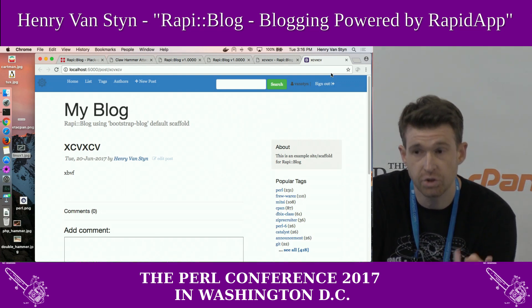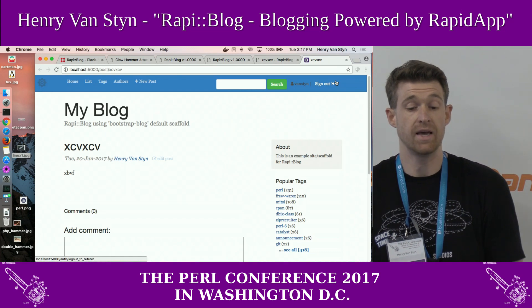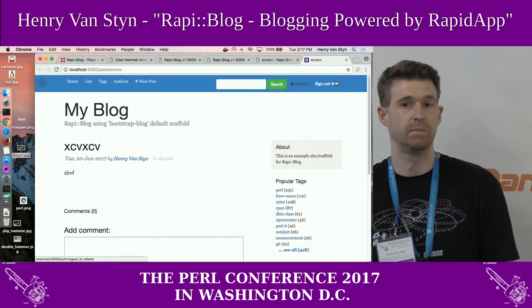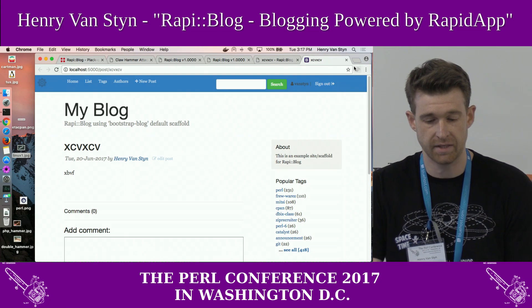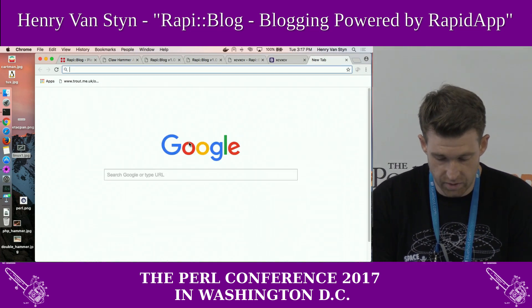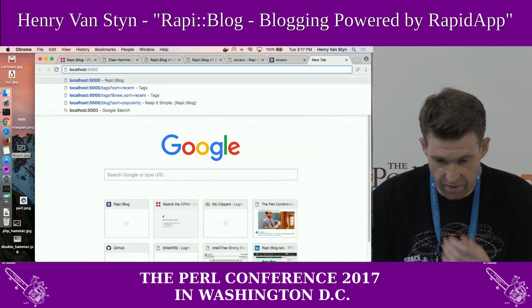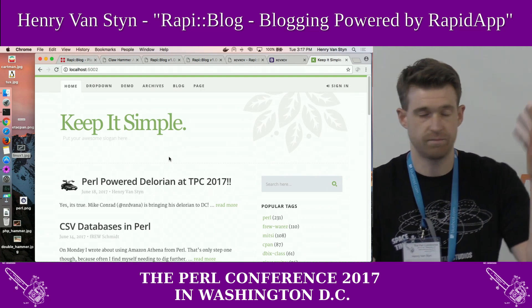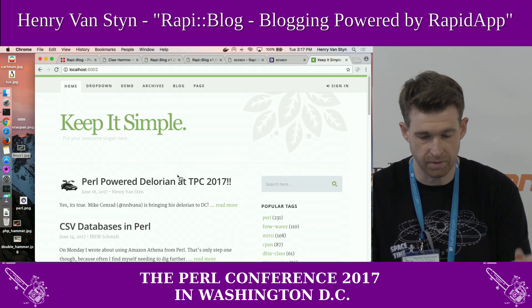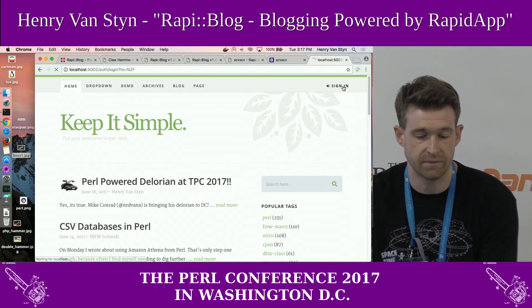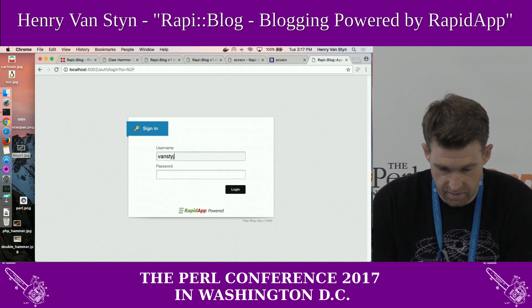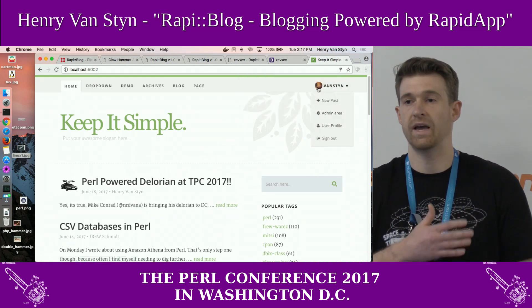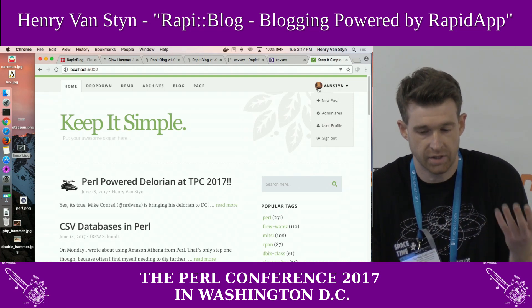I'm going to very quickly show you another scaffold. There are two scaffolds so far. This second one is based on another open source static HTML site you can download called Keep It Simple. This one decides to do things in a different way. We have a concept here like an avatar, which the other scaffold didn't choose to access, but this one does. We have a dropdown list — and the interfaces we've been calling up are still all driven by RapidApp on the back-end.